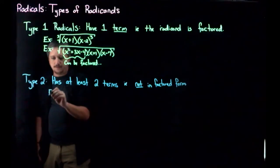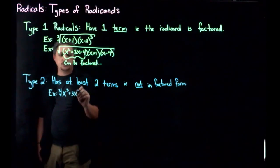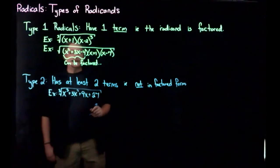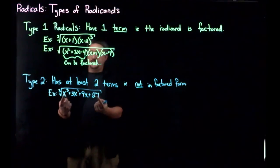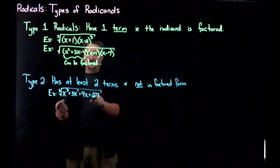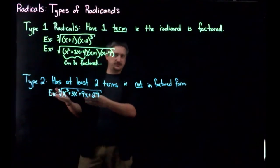For example, you might have something that looks like the third root of x cubed plus 3x squared plus 9x plus 27. So this, you'll notice if you try to plug in an x value, you do this term, then you figure this out, then you figure this out, then you figure that out, and then the last thing you do is add them together. So there's one, two, three, four terms that you add together as the last thing. So this has four terms, that's why it's a type 2 radical.